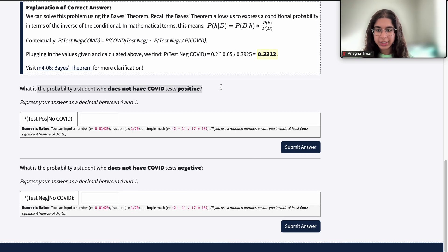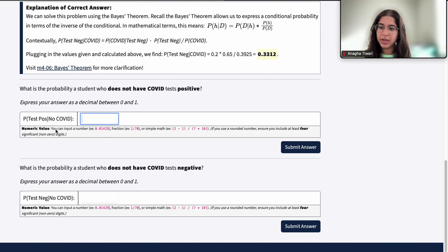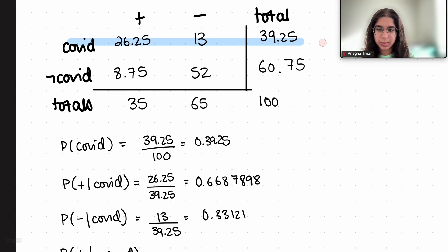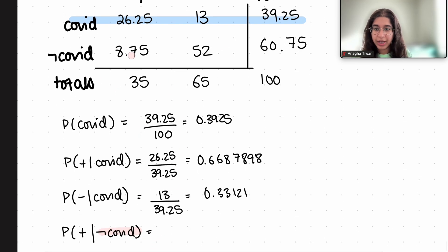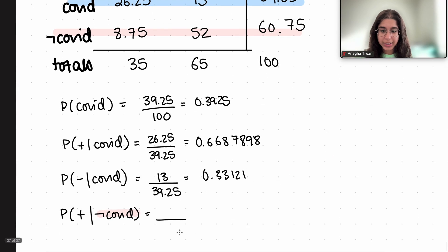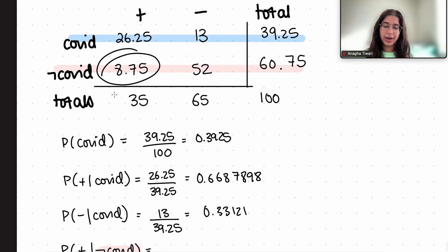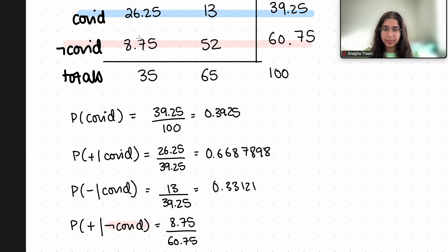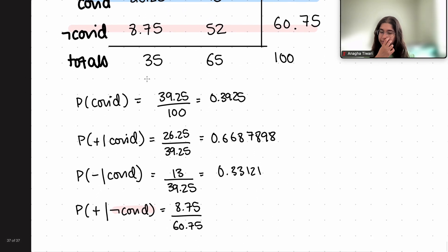What is the probability that a student who does not have COVID tests positive? That's P(positive | not COVID). Here we look at the 60.75 people who do not have COVID. Out of those, 8.75 of them got a positive test result. So the answer is 8.75 divided by 60.75.